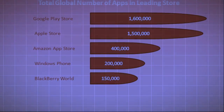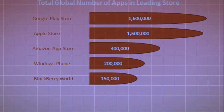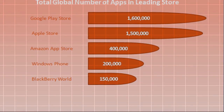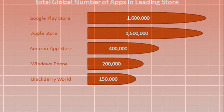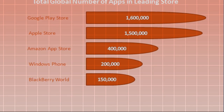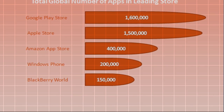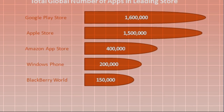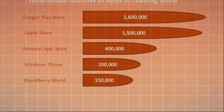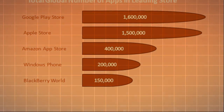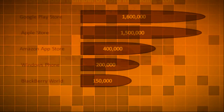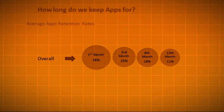Total global number of apps in leading stores: Google Play Store 1,600,000; Apple Store 1,500,000; Amazon App Store 400,000; Windows Phone 200,000; Blackberry World 150,000.